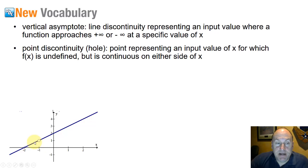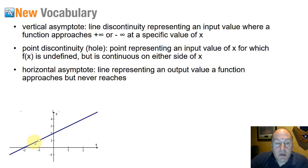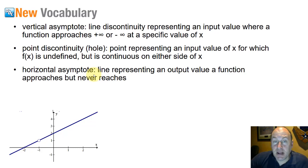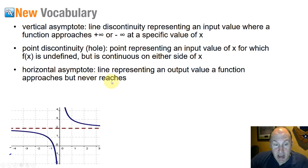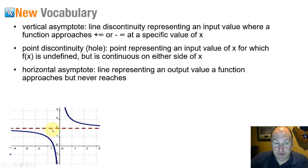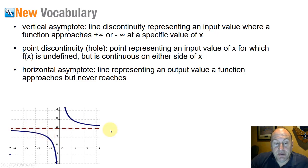It's not approaching positive or negative infinity. A horizontal asymptote is a line that represents a value the function can approach but never reach. At f(x) equals 2, this horizontal line is a point that this particular function cannot ever reach.